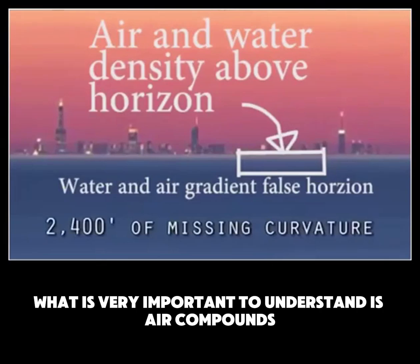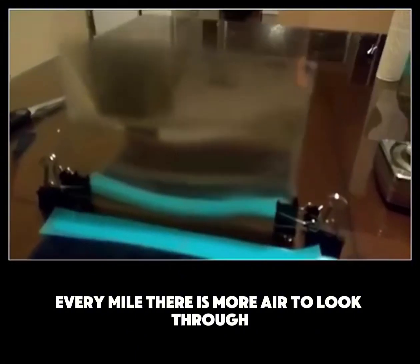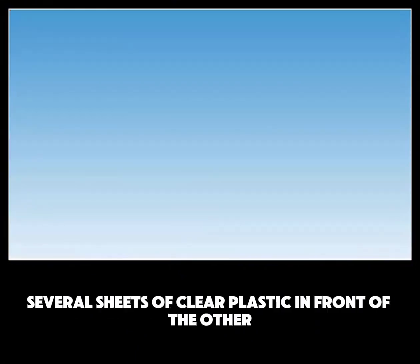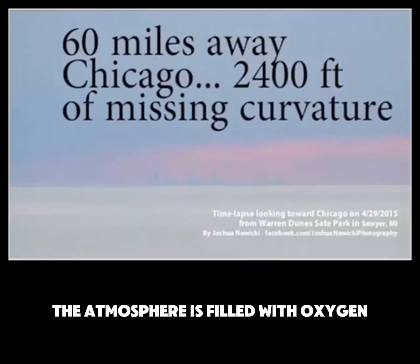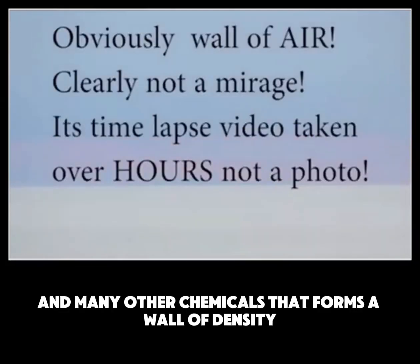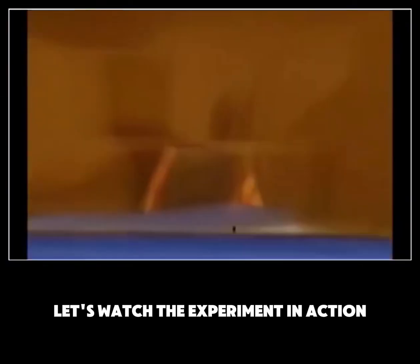What is very important to understand is air compounds. Every mile, there is more air to look through. This forms a gradient. When we put several sheets of clear plastic in front of the other, they form a wall that you cannot see through. The atmosphere is filled with oxygen, zinc, carbon, hydrogen, and many other chemicals that form a wall of density.